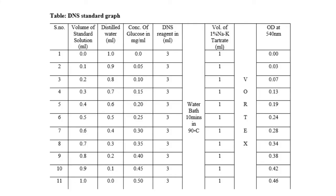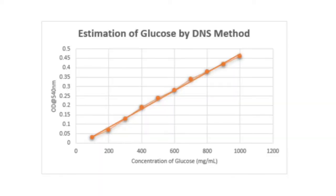Results: Plot a standard graph by taking the absorbance at 540 nanometers on the y-axis and the concentration of glucose in milligrams per ml on the x-axis. From the standard graph obtained, you can determine the concentration of glucose present in the test sample.